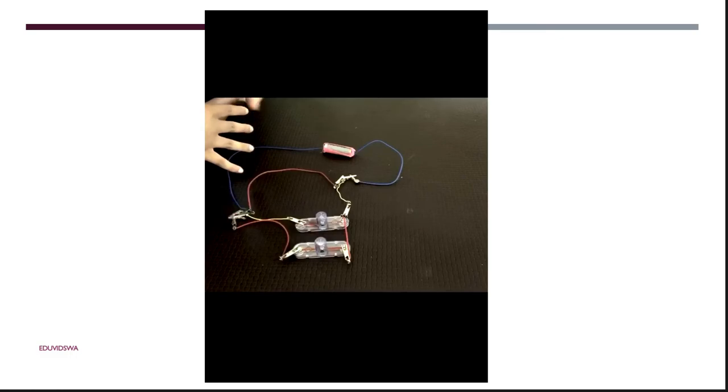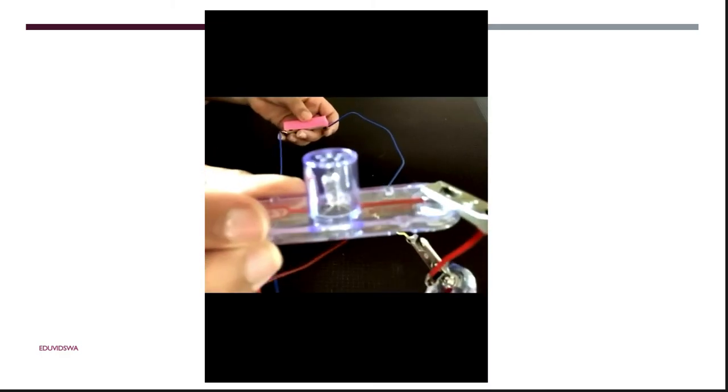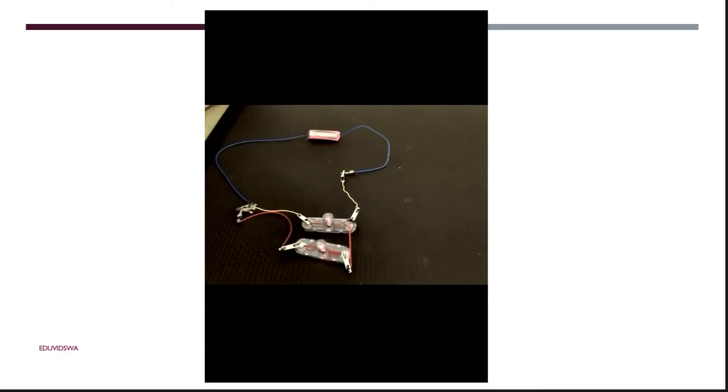Here you can see that electrons take the easier path, which means not flowing through the light bulbs and going through the single wire instead. So both lights turn off. And that's the demo.